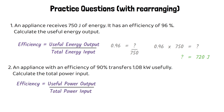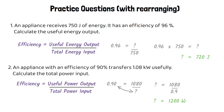For the second question, efficiency is 90% or 0.9 as a decimal. We convert the useful power output to 1080 watts. Rearranging the equation — swapping 0.9 and total power input — gives total power input equals 1080 over 0.9, which is 1200 watts. Pay attention to the unit the question asks for.